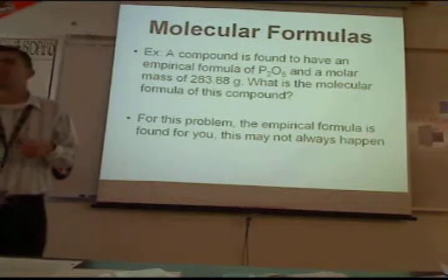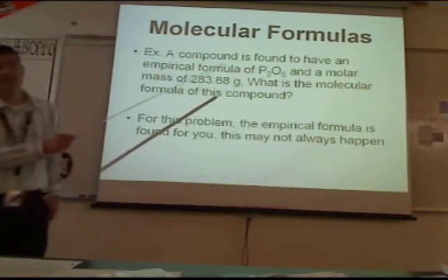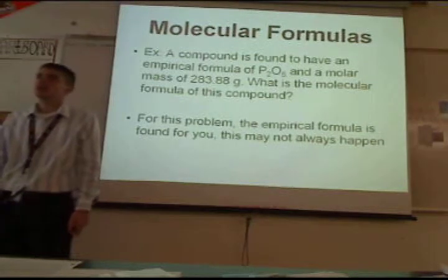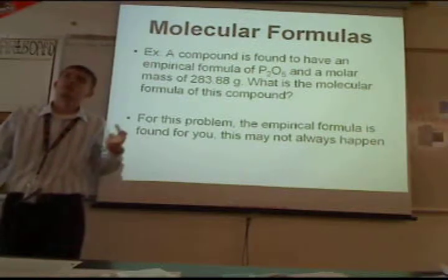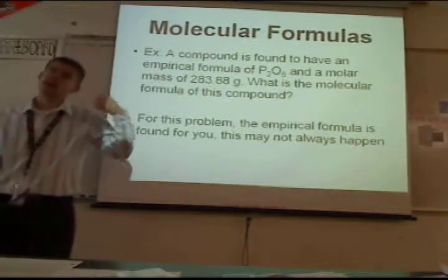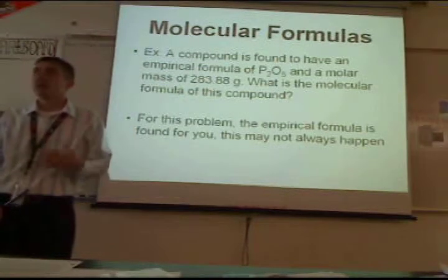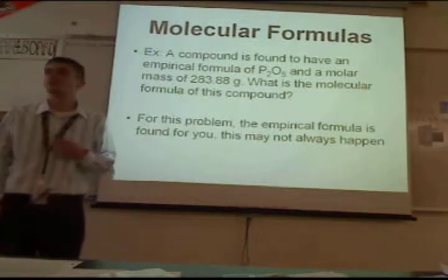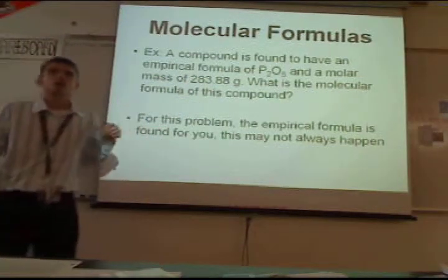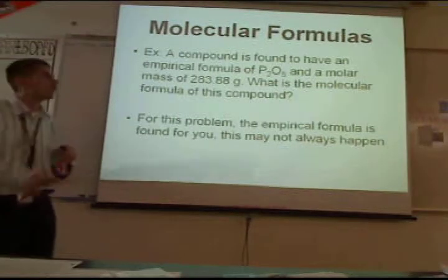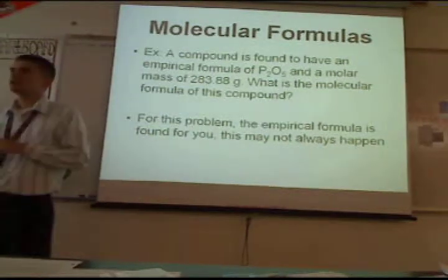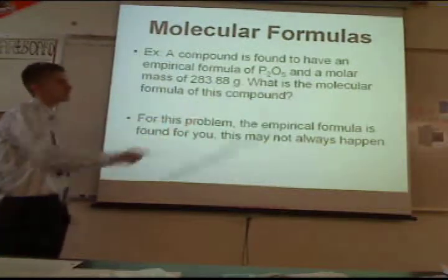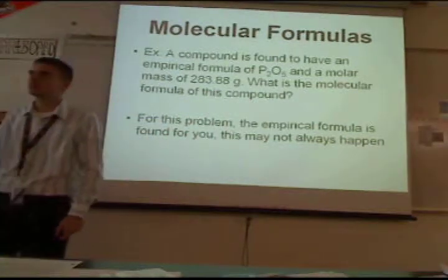A couple of things. First, this problem was nice enough to give you the empirical formula already. Sometimes it won't, so you'll have to do what we did last slide and find the empirical formula first. Then from there you'll have to solve the problem. So if the whole thing weighs 283.88 grams and we know the ratio is 2 to 5 — the empirical is P2O5 — what can we do to find the molecular formula?